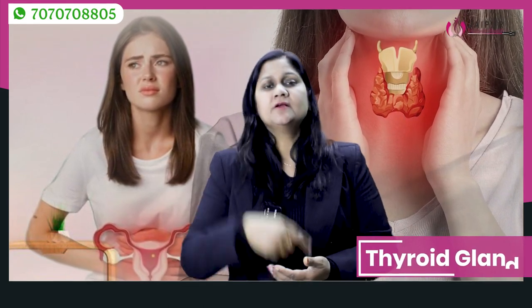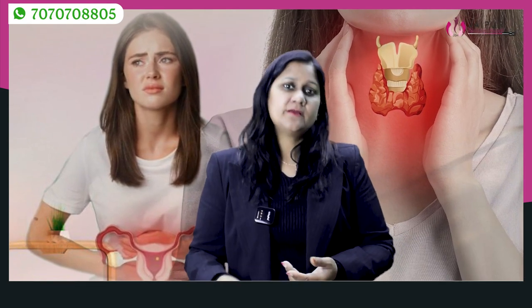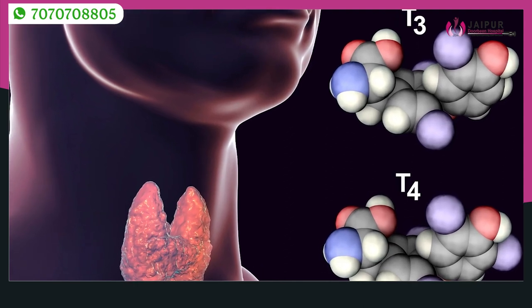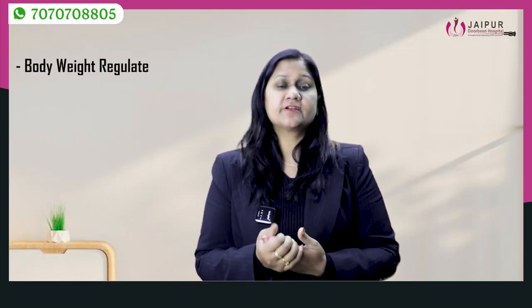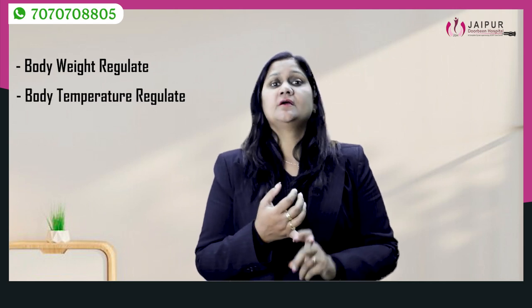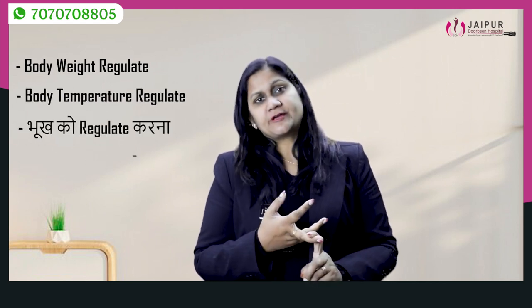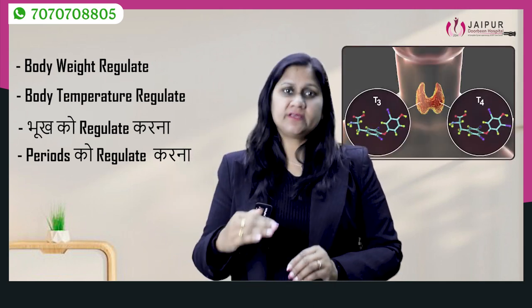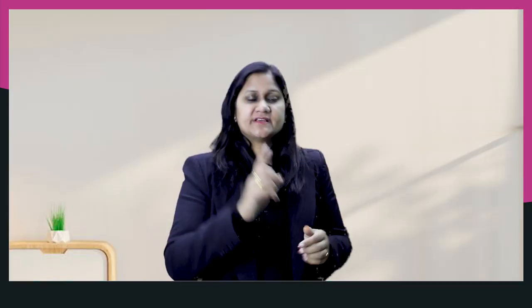If we talk about the thyroid gland, there are many things that the thyroid hormone regulates. It has very important functions: to regulate weight, body temperature, food, and periods. When the level of thyroid hormone is reduced, the TSH level will increase. TSH means thyroid stimulating hormone.